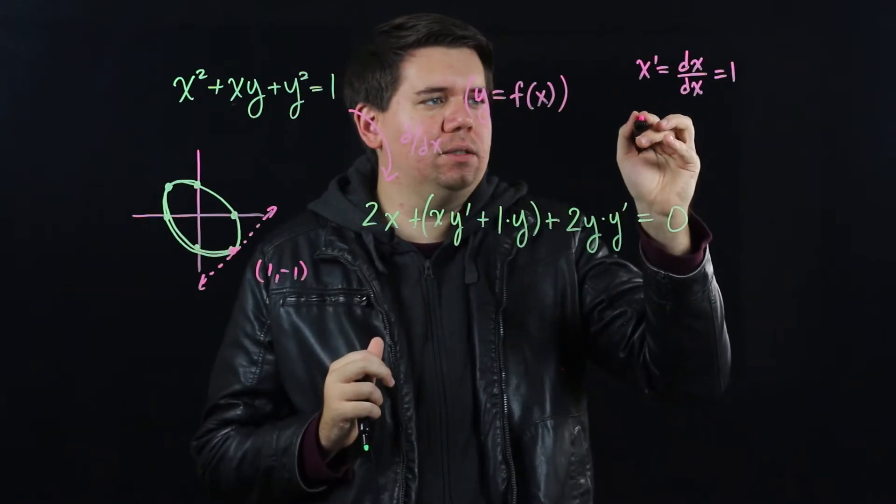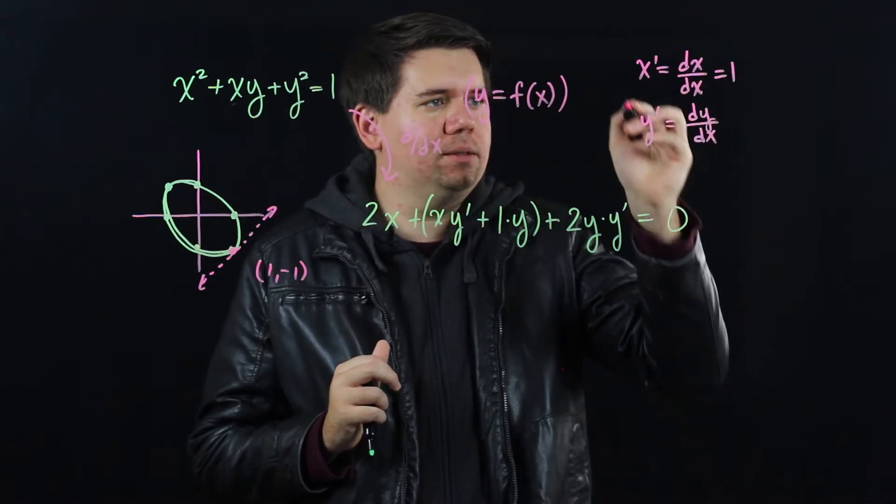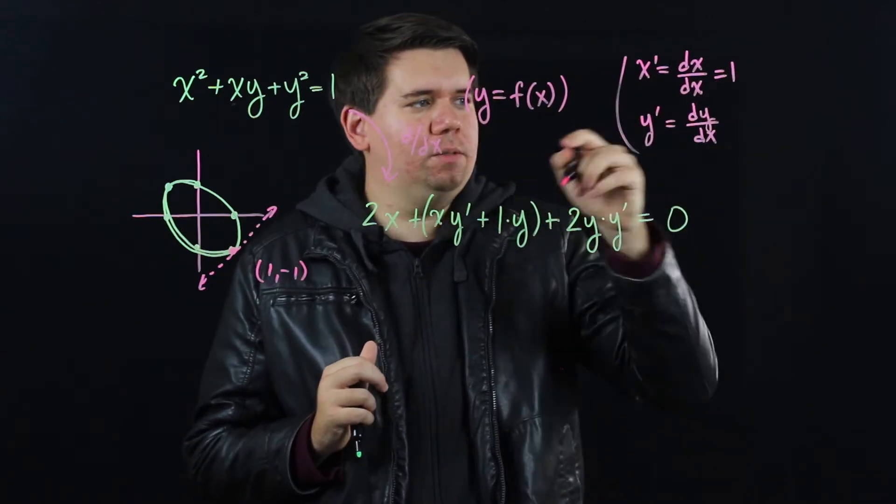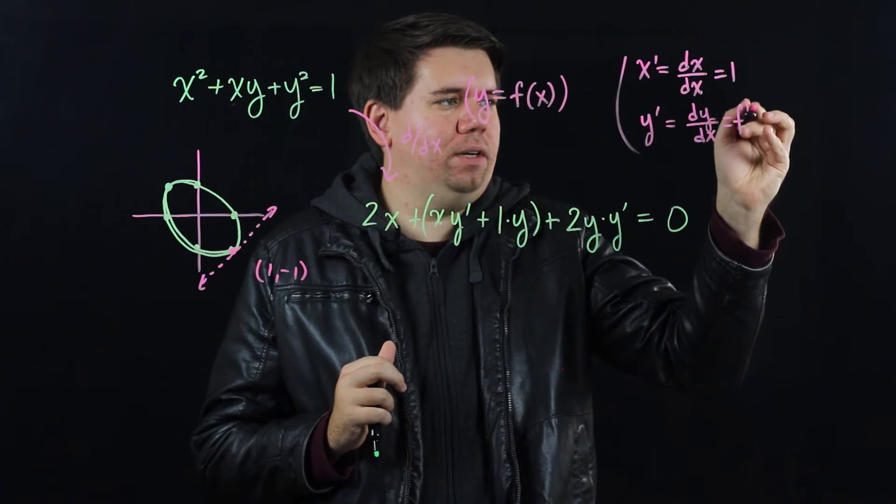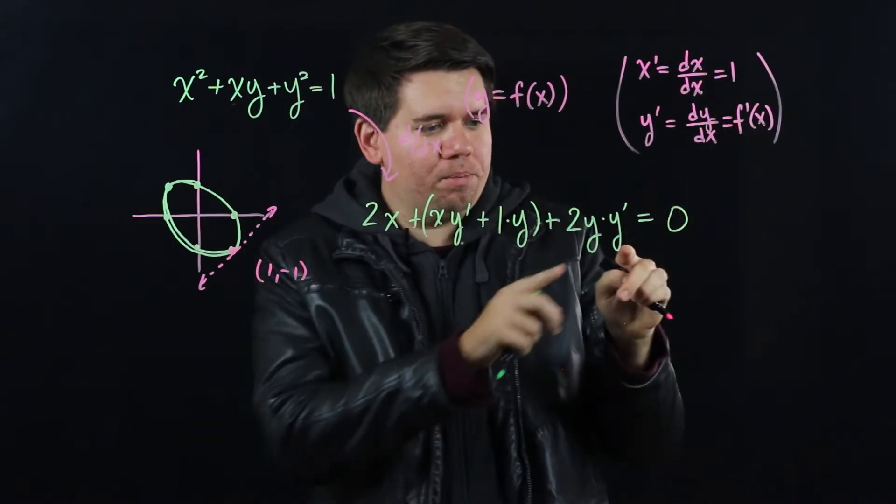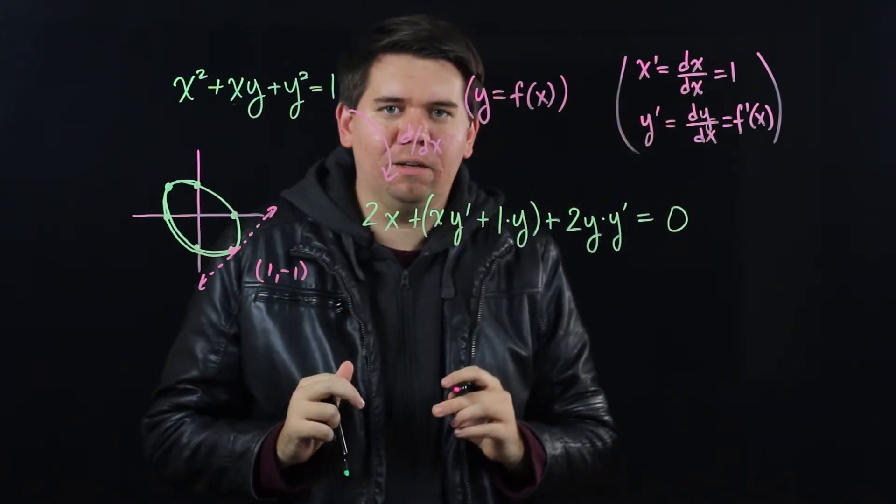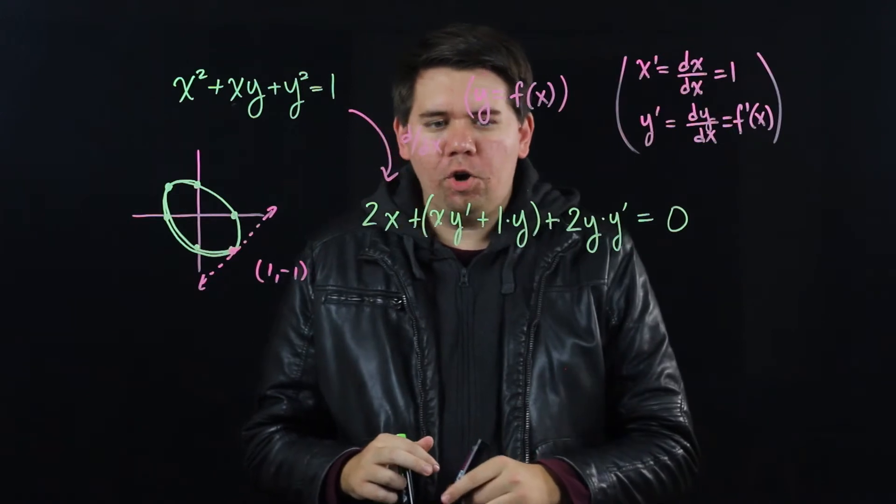By way of contrast, when I say y prime, what I'm really saying is the derivative of y with respect to x. And since I'm thinking about y as being some function, this is just the derivative of that unknown function. So this actually is something. y prime actually denotes something, whereas x prime is just 1, so we don't need to keep track of x primes.